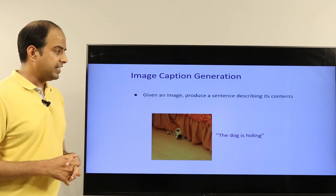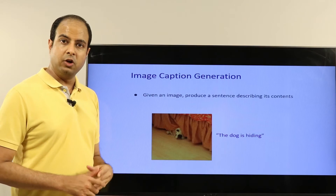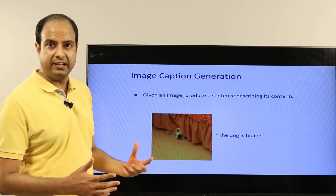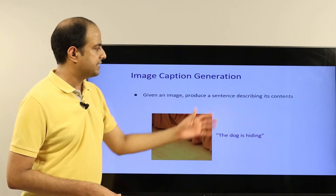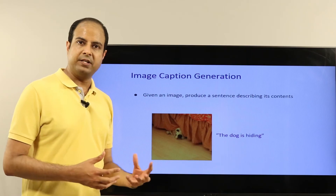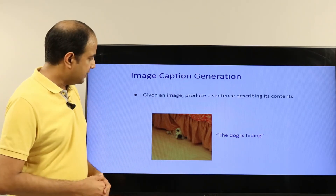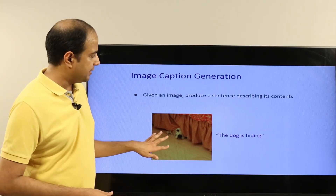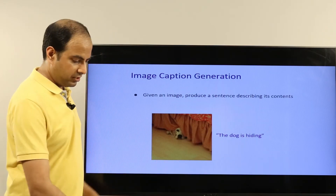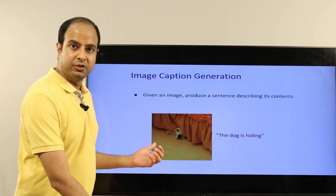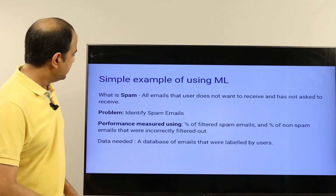Recently, people have started using machine learning in novel ways. For example, given an image, producing a sentence to describe its contents — also called image captioning. For instance, a model might generate the caption 'the dog is hiding.' People have been using machine learning to do tasks of that kind as well.